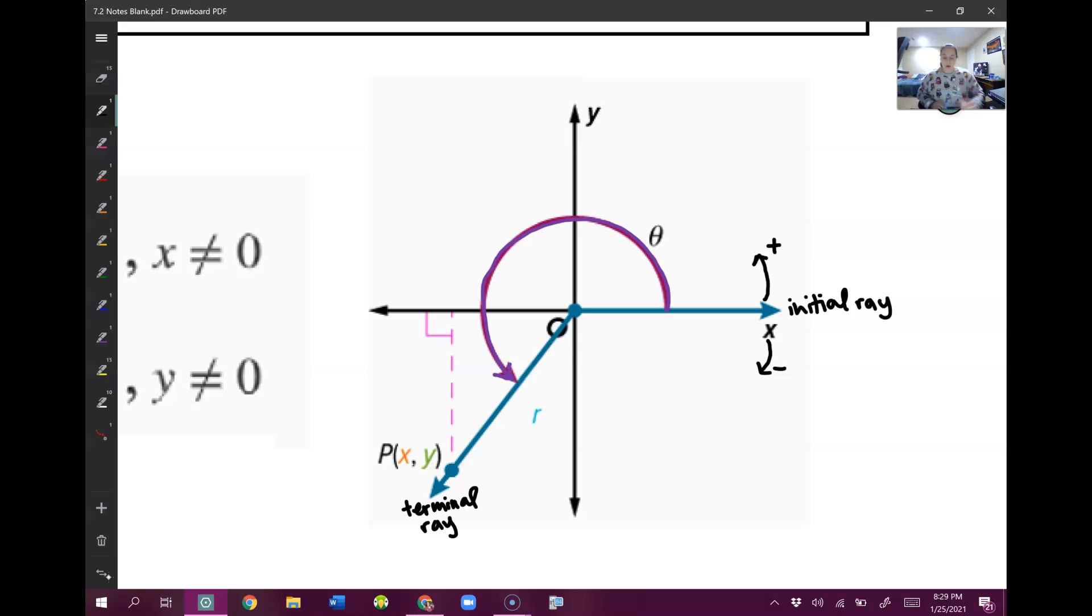Now, what I'm going to do is look right here at this terminal ray. Now, this terminal ray, I'm going to say, goes through a point. And I'm just going to call this point x, y.